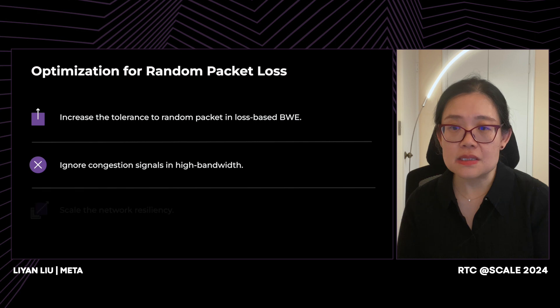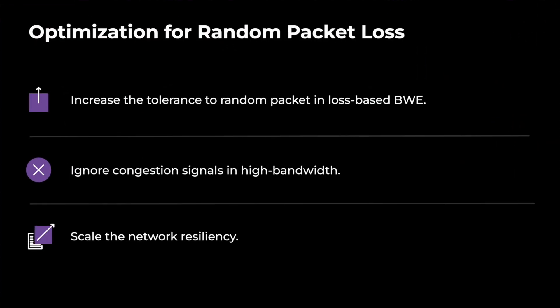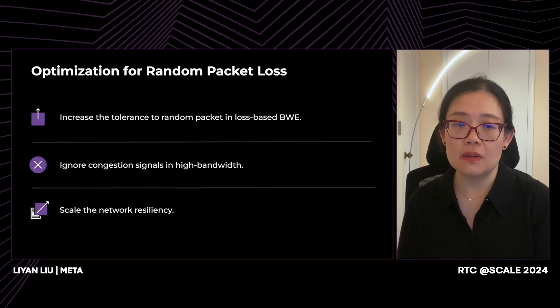This slide highlights different optimizations we can apply when random packet loss is detected. For example, we increase tolerance to random packet loss in loss-based BWE. We can also ignore congestion signals in high bandwidth, and we can scale network resiliency. This covers the network characterization part, and next Santhosh will be talking about network prediction.